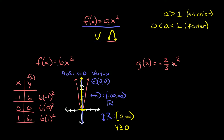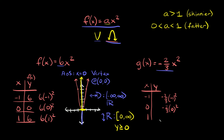Now we have g(x) = -2/3 x². We have a negative 2/3. It's negative, so we should expect it to open down. And 2/3 is between 0 and 1, so we should expect the parabola to be relatively fatter. We make our XY table and plug in negative 1, 0, and 1. Negative 1 squared is 1, so 1 times negative 2/3 equals negative 2/3. Zero squared is 0, so 0 times negative 2/3 is 0. And 1 squared is 1, so 1 times negative 2/3 is also negative 2/3.